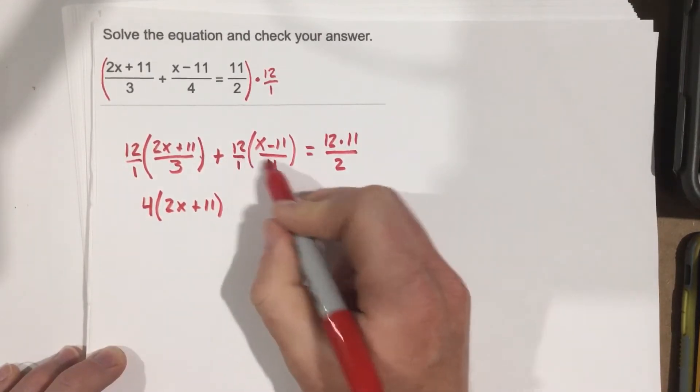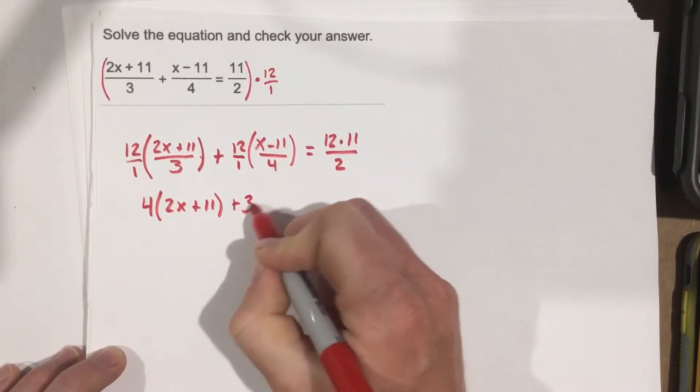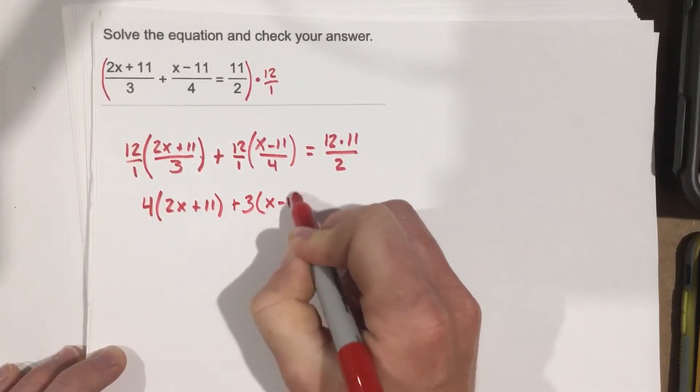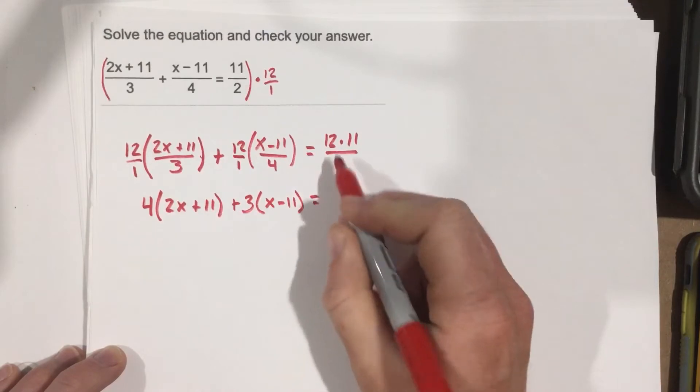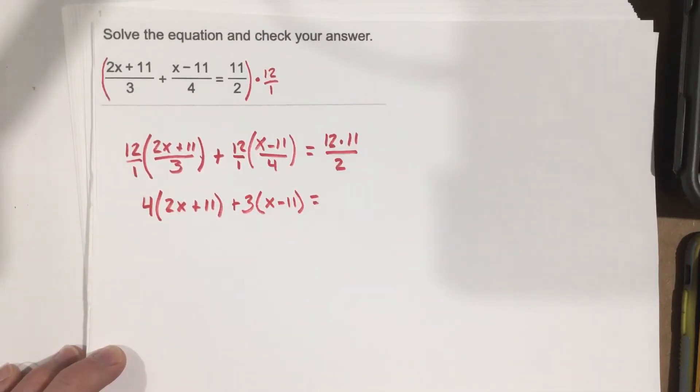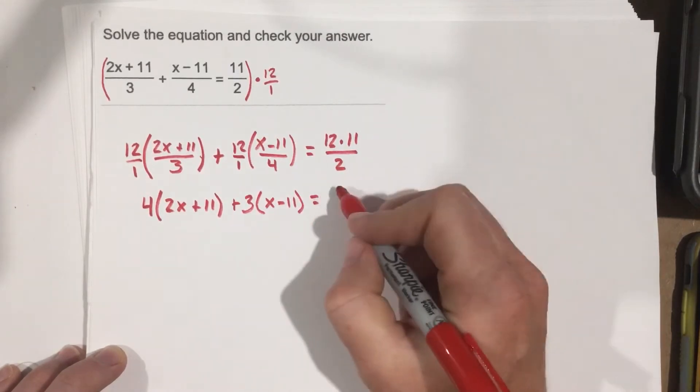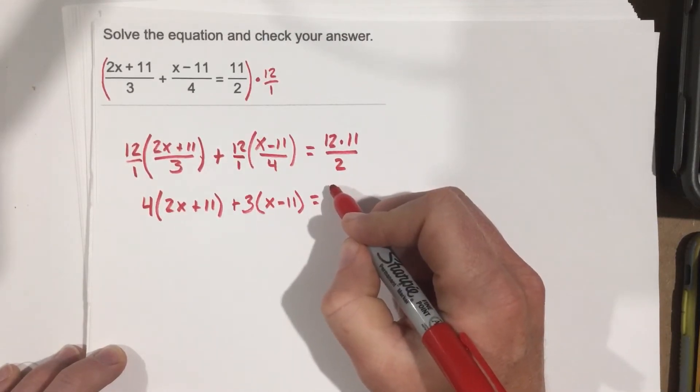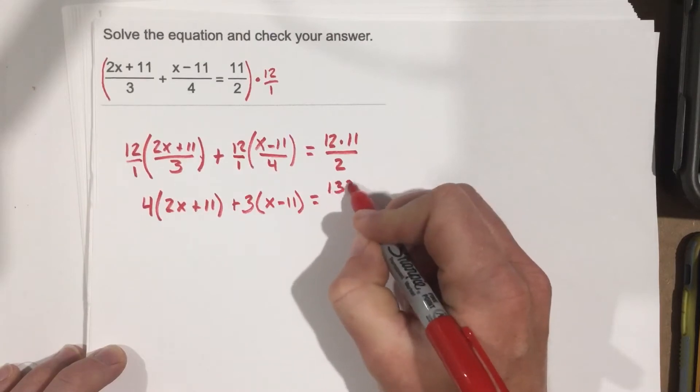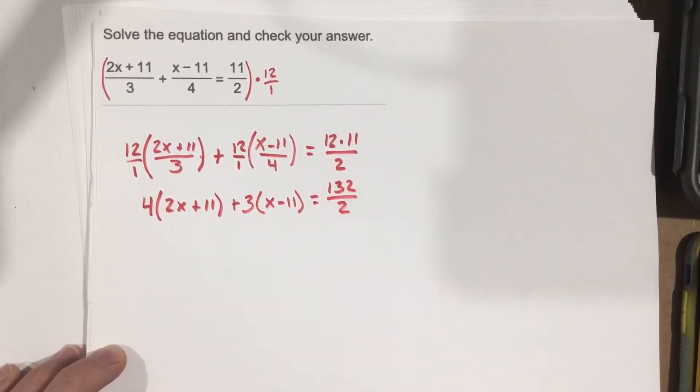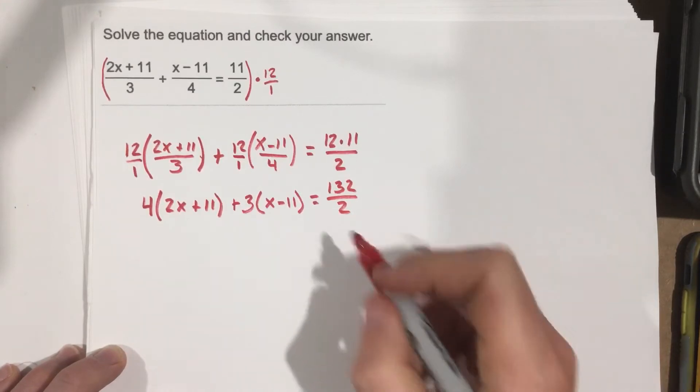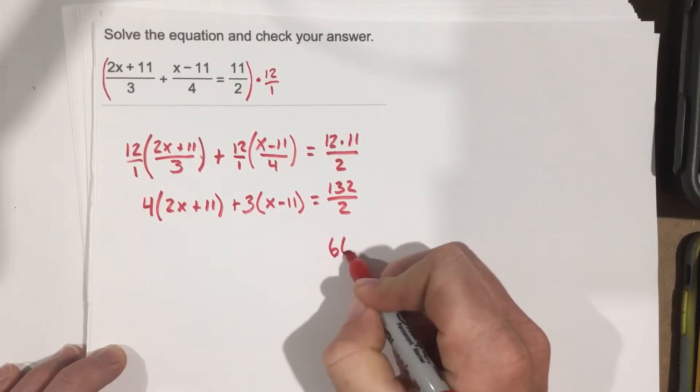And then here we'll end up with 3, so that's plus 3(x-11). On the right side we get 12 times 11, which is 132/2, which we can reduce. Let's do that first. It's 66, so equals 66.